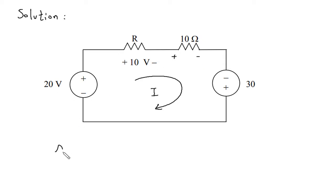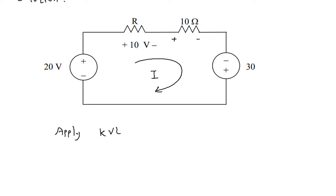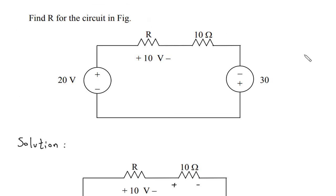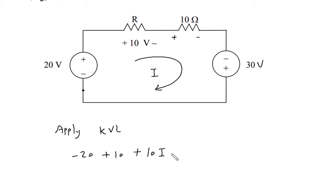Let us apply KVL to the loop. Let us say we will start from this point. So this will be minus 20, then plus 10, then plus 10 into I, 10I, then minus 30, minus 30 volts is equal to 0.